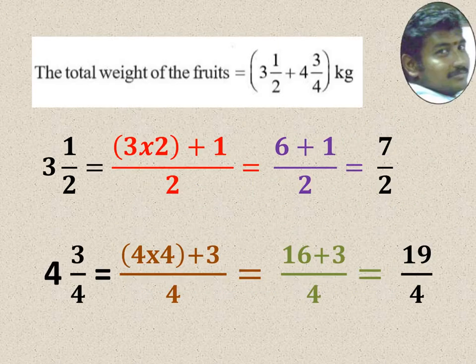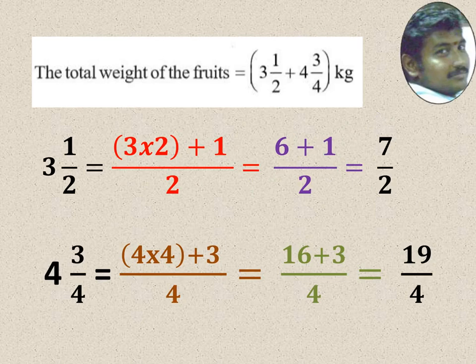After making improper, you can check like or unlike. You see, 3 1 by 2. So 3 into 2 is 6 plus 1, 7, 7 by 2. So 3 1 by 2 is equal to 7 by 2. 4 3 by 4, 4 into 4, 16, 16 plus 3, 19, 19 by 4. So 4 3 by 4 is equal to 19 by 4.